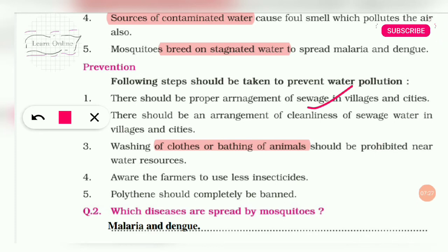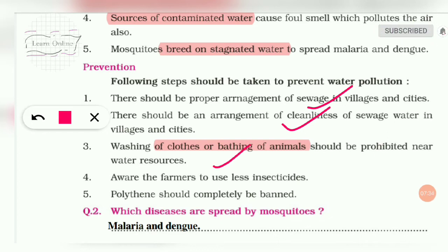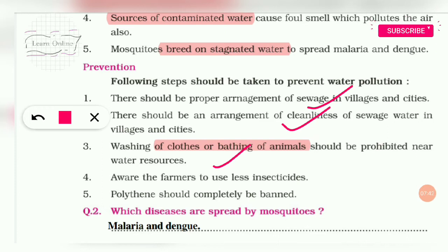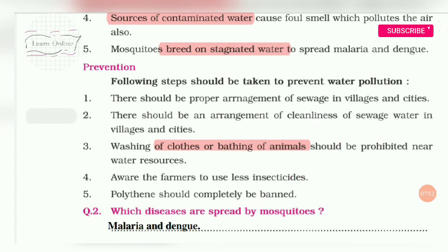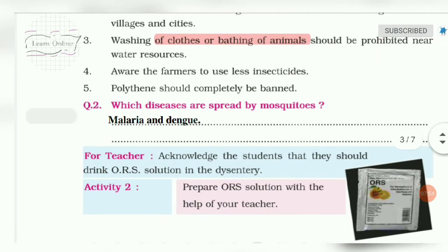To prevent water pollution, we should make proper arrangements for sewage and drains in villages and cities. Washing clothes and animals near water resources should be completely prohibited. Farmers should be made aware to use minimal insecticides, and the use of polythene should be completely banned.